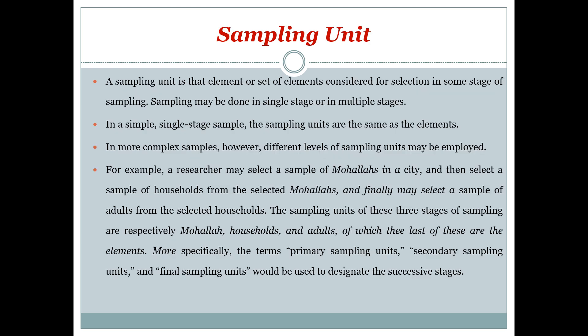A sampling unit is the element or set of elements considered for selection in some stage of sampling. Sampling may be done on a single stage or in multiple stages — similar to cricket matches where teams progress through quarterfinals, semifinals, and finals. In a simple single-stage sample, the sampling units are the same as the elements and will not change.